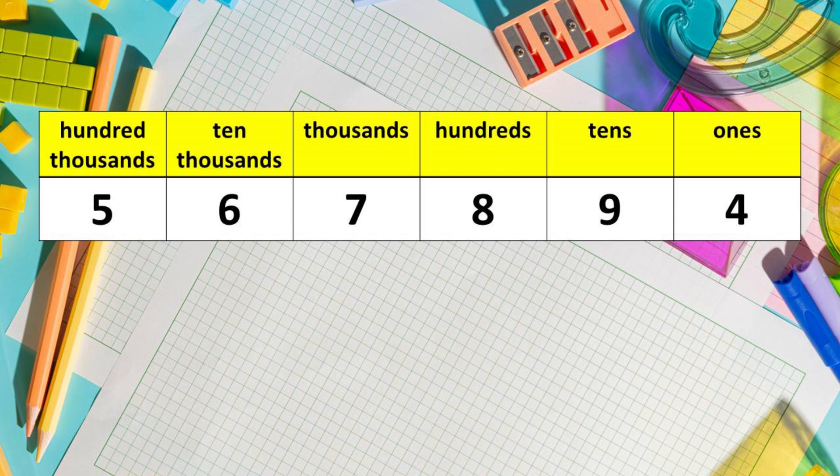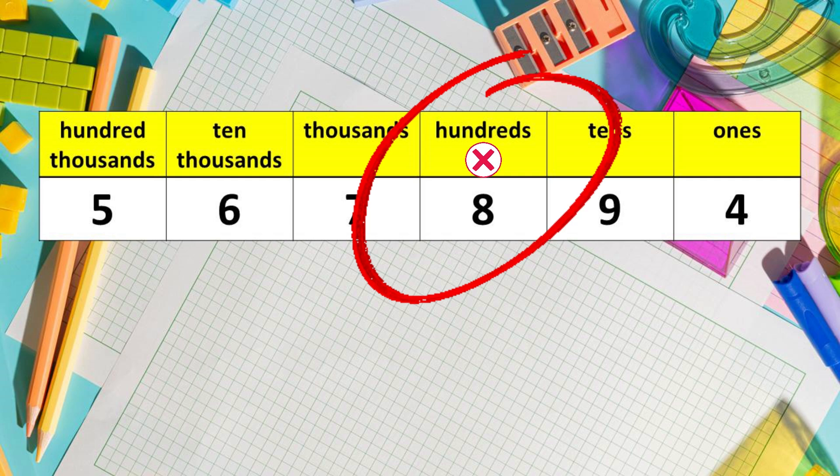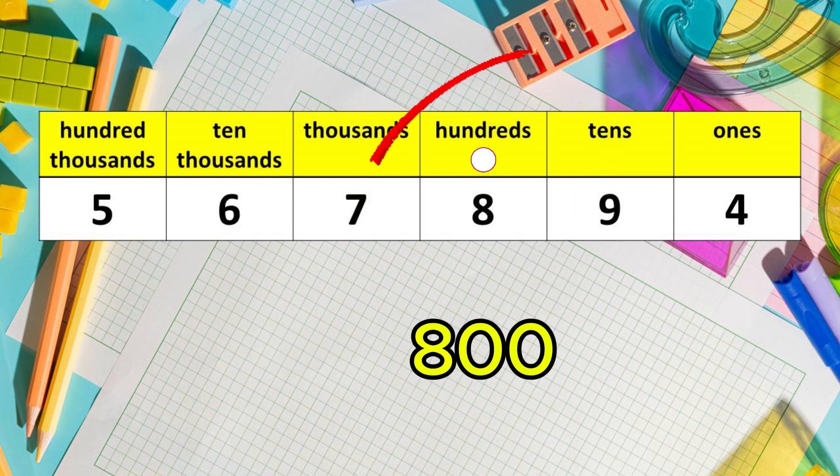Next, we have the value of 8. 8 is in the hundreds place. So we are going to multiply 100 by 8. The answer is? That's right. 800. So the value of 8 is 800.